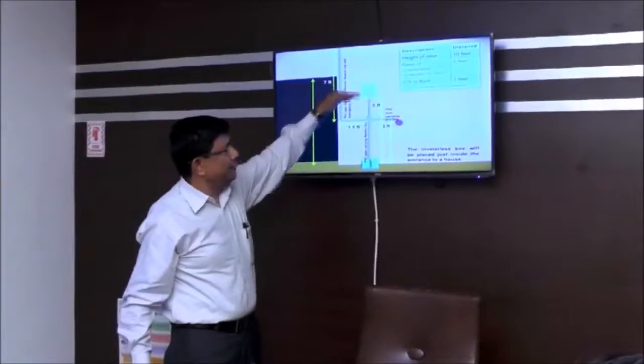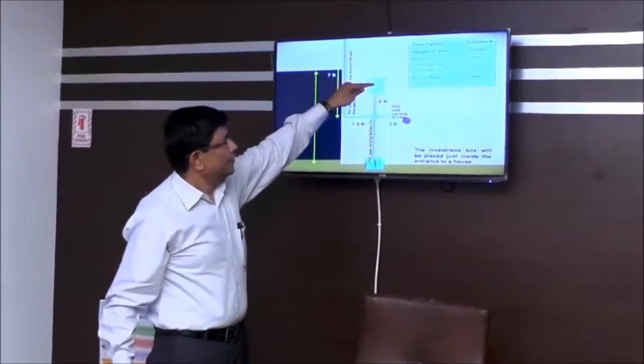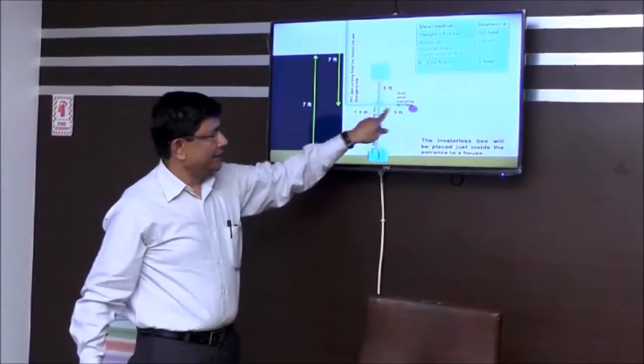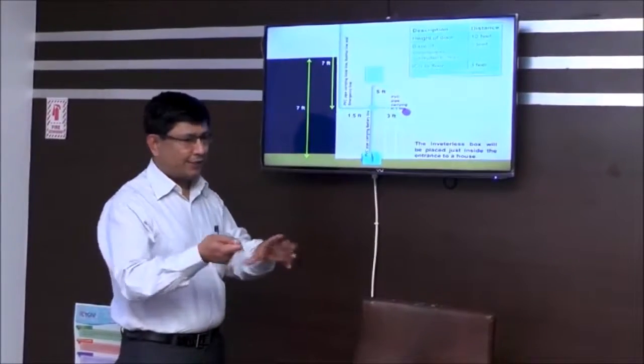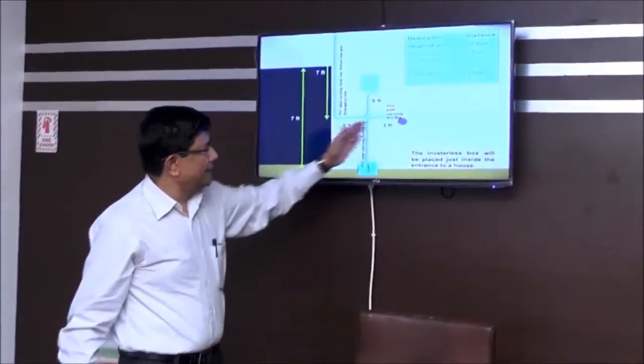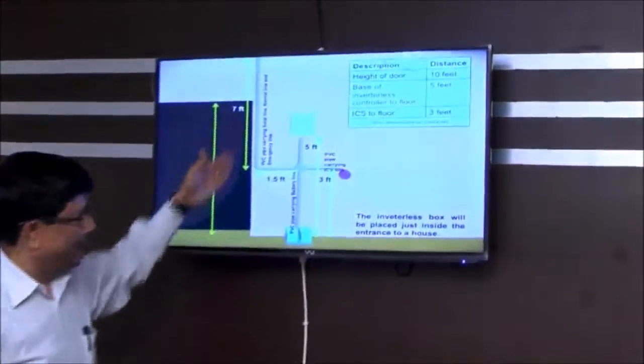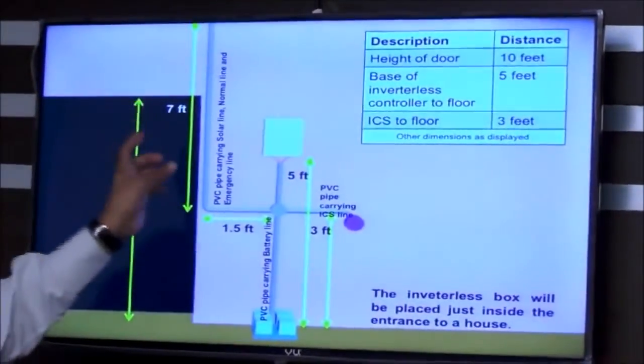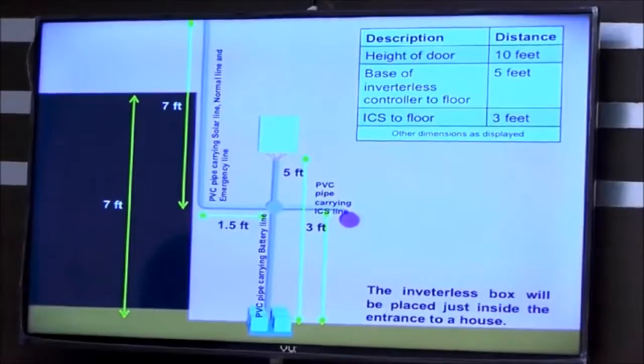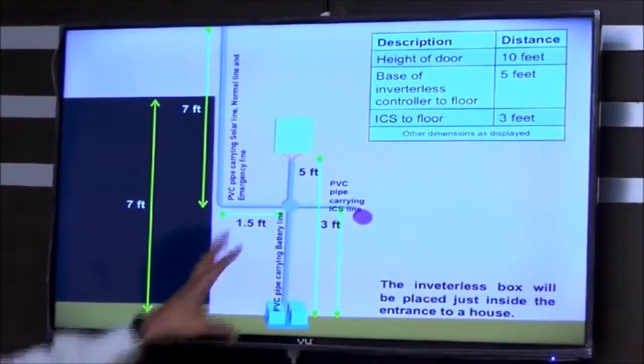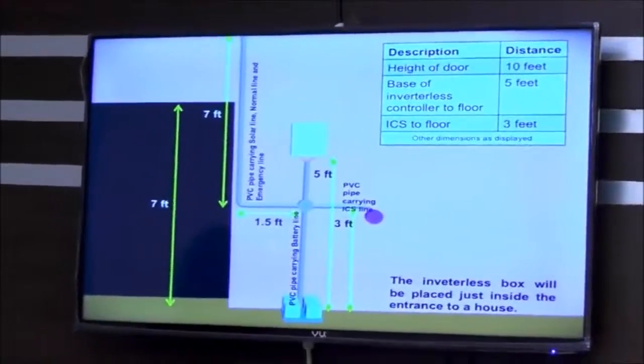What we have done is the inverter box is about five feet from the ground so that you can look at all the LED indications. The mobile charger is at about three feet so that you can charge your mobile phones from there. This whole distance is about four and a half feet from the edge of that wall. You take this wiring along the edge of the wall so that you provide a clamp and everything there. If you do this, then you will have an approximate idea in terms of how much cable is required.